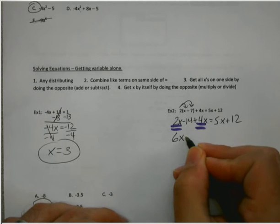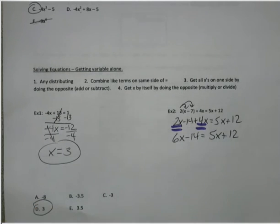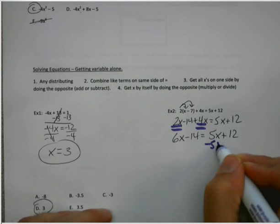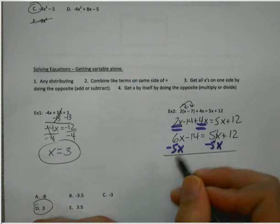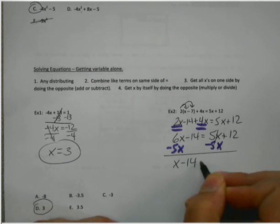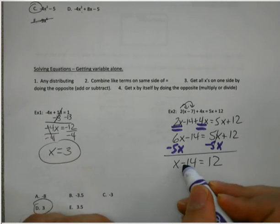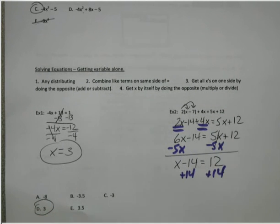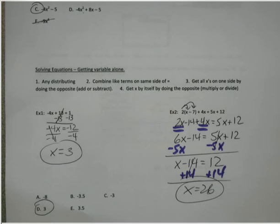It's better to take your time and get it right than to hurry and get it wrong. Get all the x's to one side by doing the opposite. I like keeping my x's positive. I also, as you can see, like using colors to keep my steps separate. And then what do I do to get x by itself? Well, since I'm minusing 14, I'm going to add 14 on both of those. Get my answer. So good luck with the assignment. Any questions, as always, let me know.